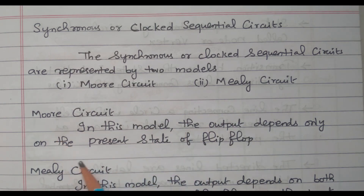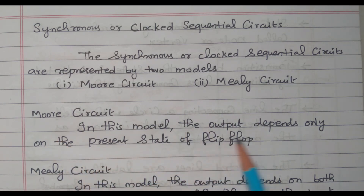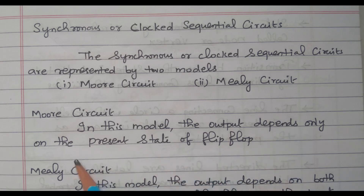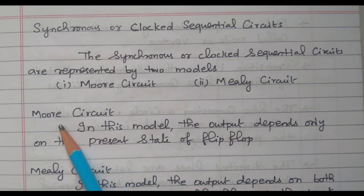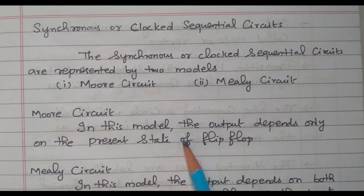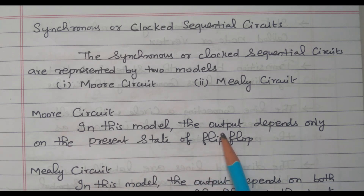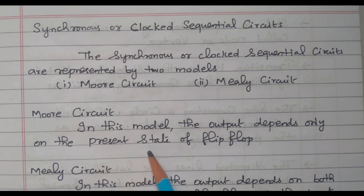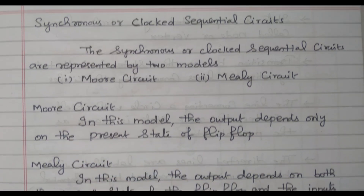The Murray circuit — in this model, the output depends only on the present state of the flip-flop. In the Murray circuit, there is a present state and a next state. The output depends upon only the present state of the flip-flop. That is called the Murray circuit.